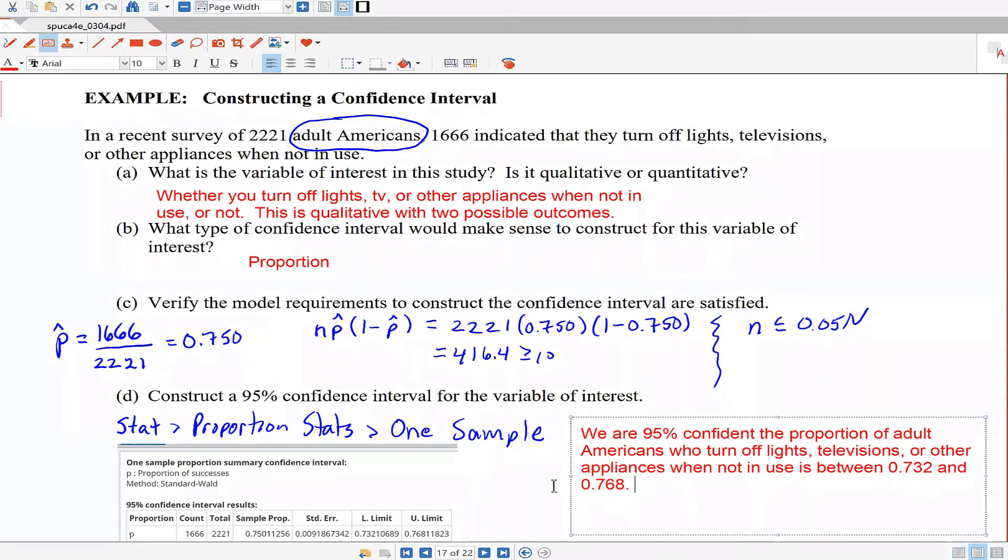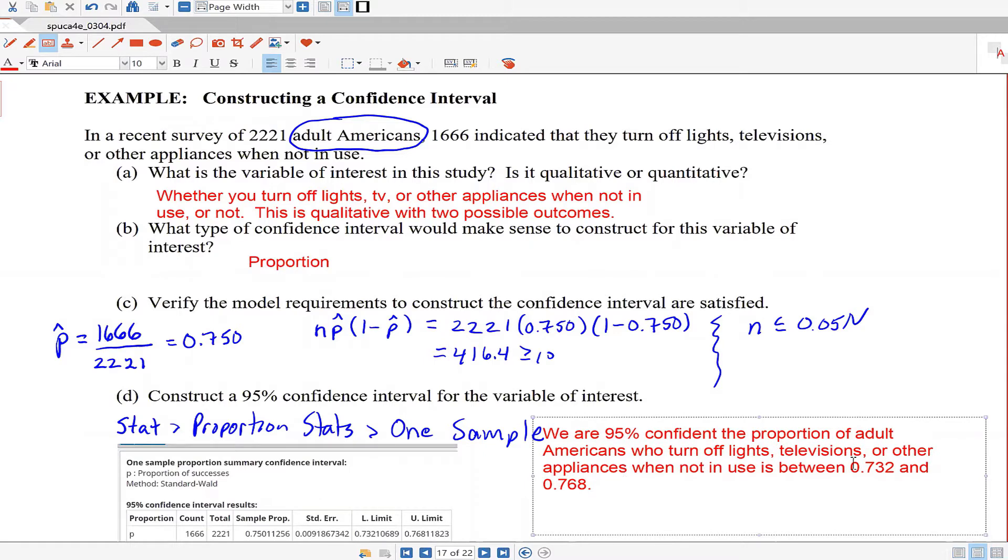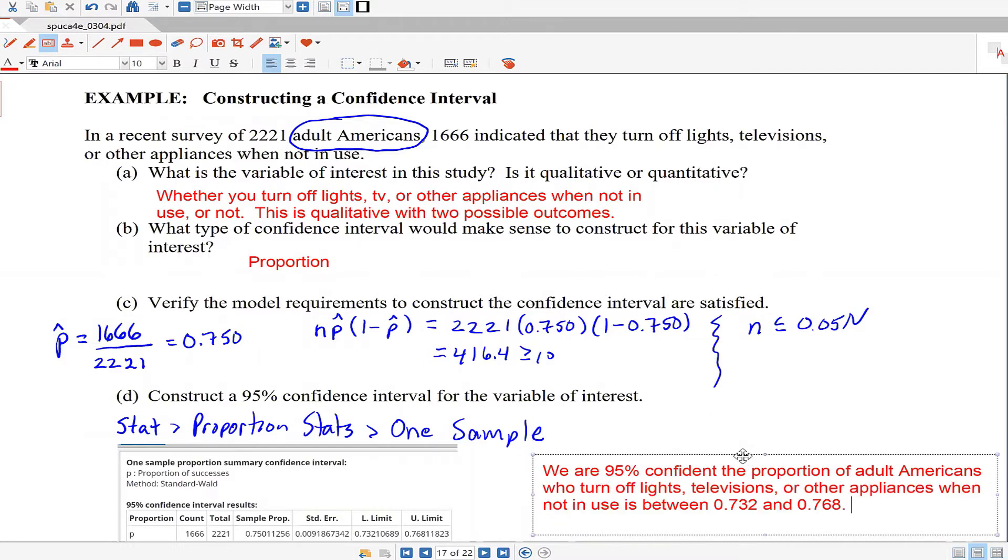It's a pretty narrow interval. I think it's narrow primarily because the size of your sample is quite large. Remember we mentioned that the typical sample size from Gallup is around 1,000 to 1,100 individuals, and this one is definitely a lot bigger than that, or double it really. That's why you have a narrower interval.